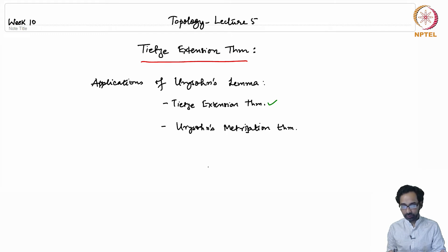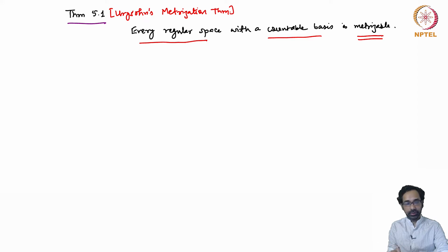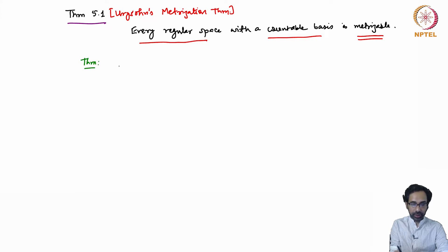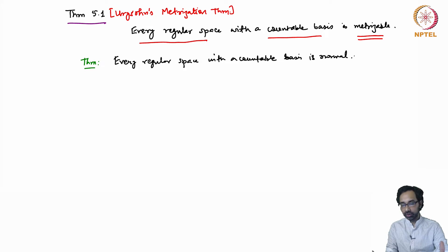Let me give first the statement of Urysohn's Metrization Theorem and then we will look at the Tietze Extension Theorem. The statement says that every regular space with a countable basis is metrizable. Remember that we have already seen the theorem which says every regular space with a countable basis is normal. Urysohn's Metrization Theorem is the stronger form — it says every regular space with a countable basis is actually metrizable.